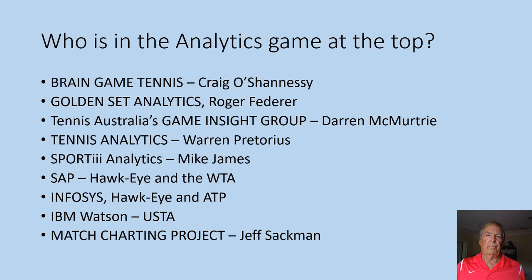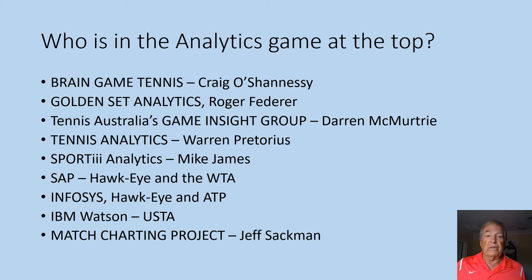If you were a top ranked player, you'd have access to statistics that are financially out of reach for the rest of us. Examples include Brain Game Tennis, Golden Set Analytics, Tennis Australia's Game Insight Group, Tennis Analytics, Sporting Analytics, SAP with Hawkeye and the WTA, Infosys with Hawkeye and the ATP, IBM's Watson with the USTA, and a wonderful match charting system through Jeff Sackmann.